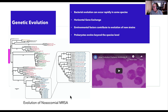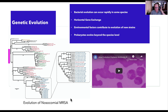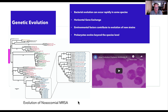In order to evolve, since bacteria reproduce through binary fission — which is essentially a type of cloning — they're copying everything, and there's no mixing of genetic material. Bacteria have to find other ways to evolve.